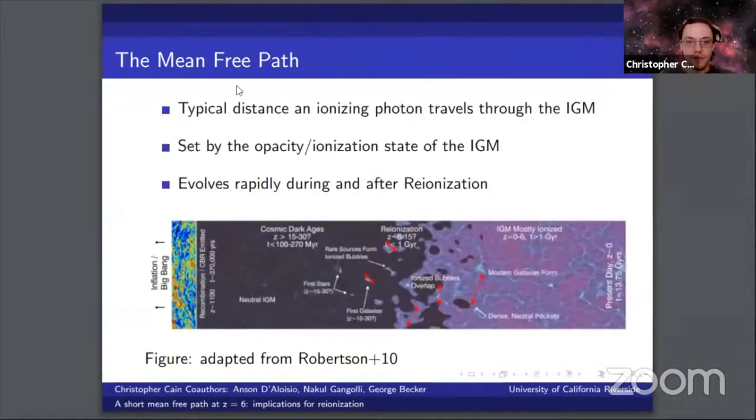The mean free path is just the typical distance that an ionizing photon travels through the IGM before it's absorbed. This is set by the opacity of the ionized gas in the IGM as well as the distribution of the neutral gas.